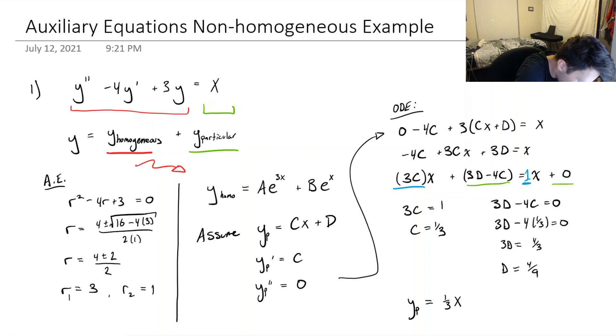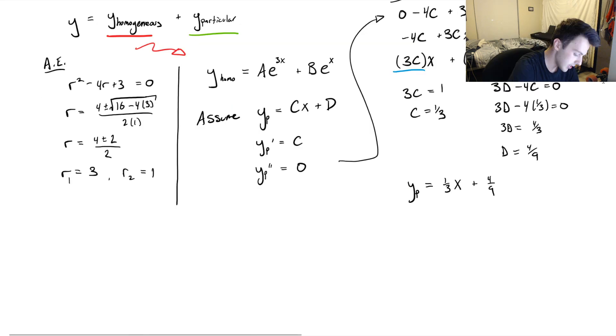So now we have our homogeneous part of the solution and the particular part of the solution. So let's write the full solution. Y is equal to the homogeneous part, which was A times e to the 3x plus B times e to the x, and then our particular part of the solution is plus 1 third x plus 4 ninths. So this here would be the solution to the ODE that we were given.